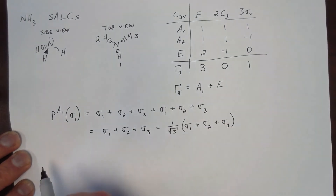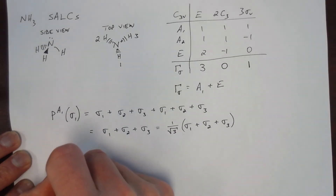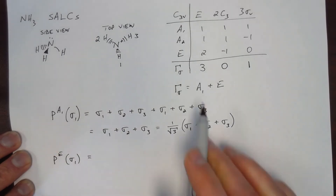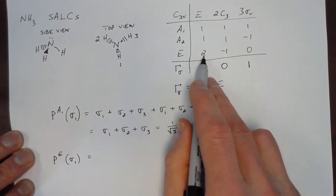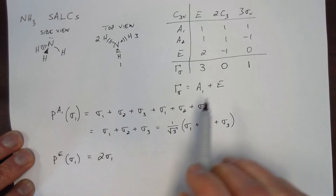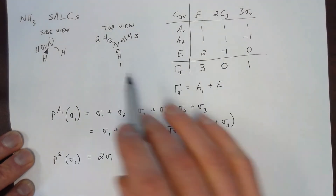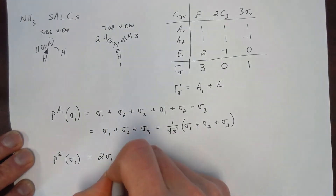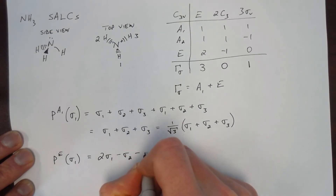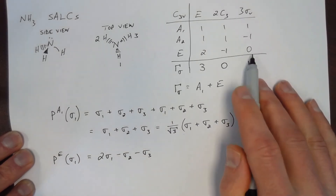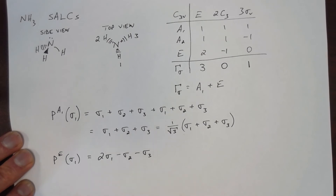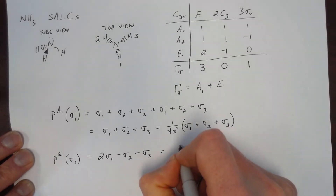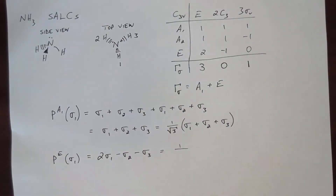Now we project the E representation onto sigma one. When the identity operation acts on it, sigma one stays put, so we have the character two times sigma one. When the C3 operations act, one maps to two or three, and the character is negative one, giving minus sigma two minus sigma three. The character for the sigma v operations is zero, so those contribute nothing. Normalizing this symmetry adapted linear combination, we multiply by one over the square root of six, giving (1/√6)(2σ1 − σ2 − σ3).